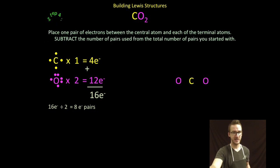Step 4: place a pair of electrons between the central atom and each of the terminal atoms. Again recognize I've color coded here so that you can remember that one of those electrons is coming from the central atom and one from the terminal. I subtract the number of pairs used - in this case just two. I've got six pairs left over.